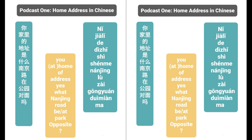OK, good stuff. Let's go through the key vocab from that lesson. Your home / the place where you live: 你家, or 家里. Address: 地址. Home address: 家里的地址. Street: 路. 135: 一百三十五 — number 135: 一百三十五号. Park: 公园. Across from: 对面.